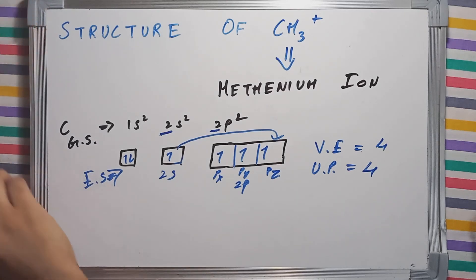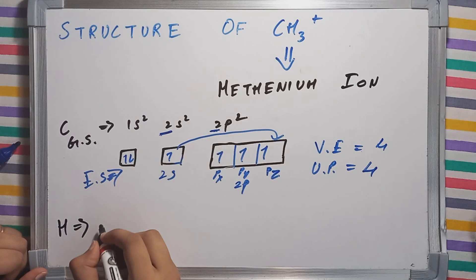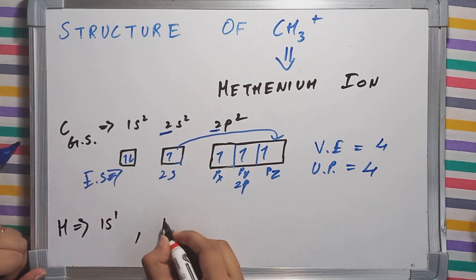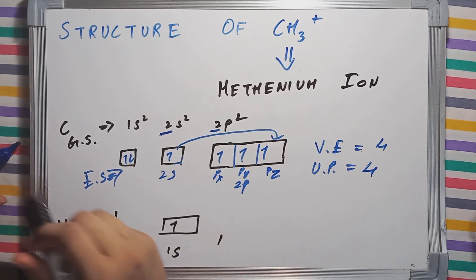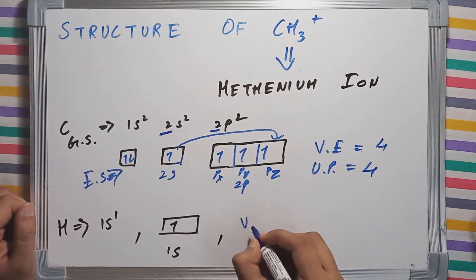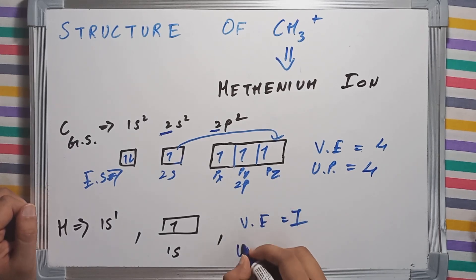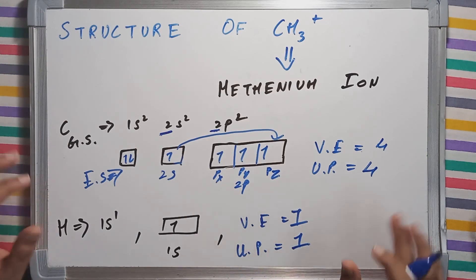The electronic configuration of hydrogen is 1s1. And I am going to draw this structure: 1s subshell having just a single electron. The number of valence electrons is 1 and the number of unpaired electrons is also 1.